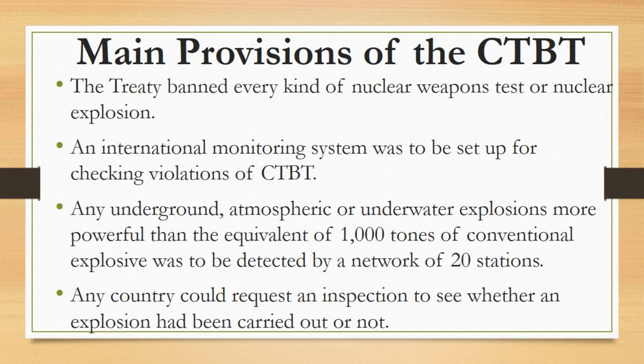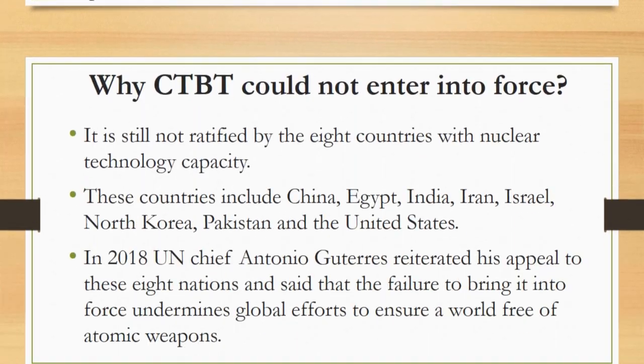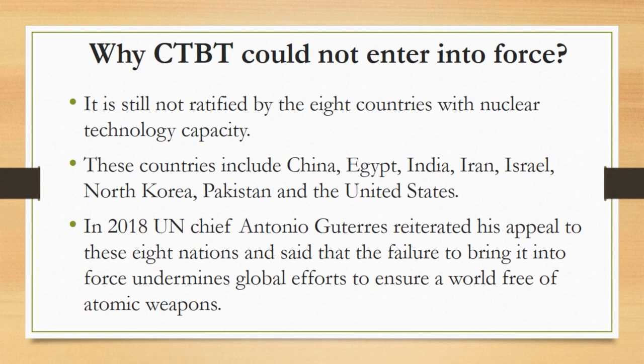CTBT is one of the most widely supported arms control treaties, but it could not get into force. The reason is that it is still not ratified by eight countries with nuclear technology capacity. These countries include China, Egypt, India, Iran, Israel, North Korea, Pakistan, and the United States.